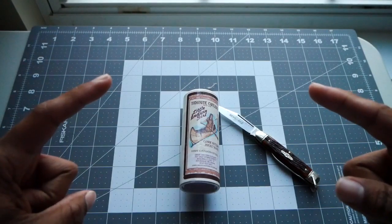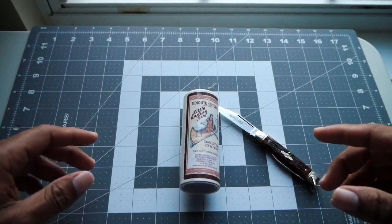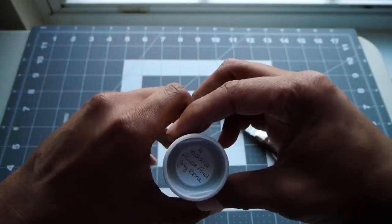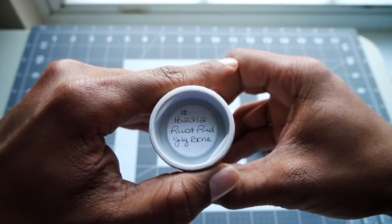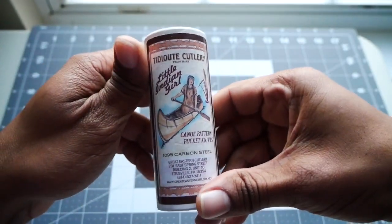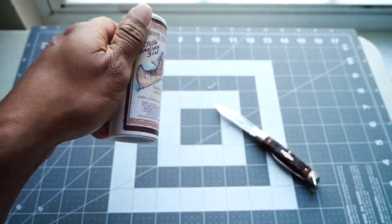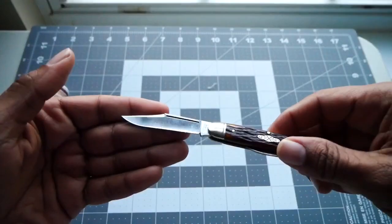But this is the GEC Canoe Knife, the pattern is 16 if I'm not mistaken, yes, the 16 Rust Red Jigbone Canoe Knife. So, before we open this up, let me show you what I have here today and what I carried.